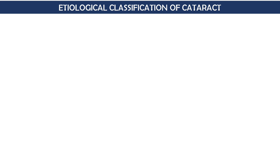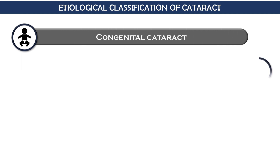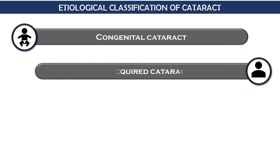Let's see the etiological classification of cataract. Etiologically, cataract is divided into two main categories: congenital and developmental cataract, or acquired cataract. Congenital cataract is one which is present since birth — when a baby is born already having cataract, we call it congenital cataract. The cataract that develops or forms after birth is called acquired cataract.